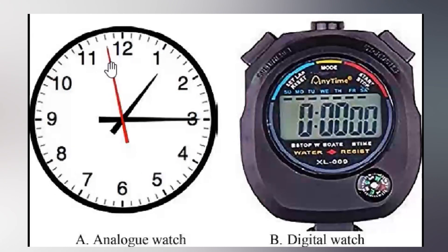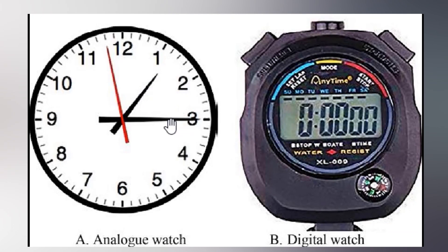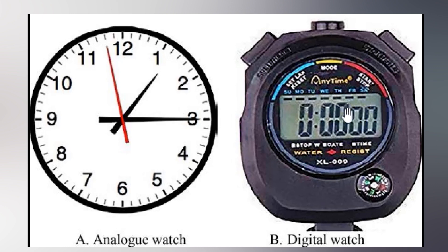The analog watch has a face — you can read hours, minutes, and seconds from it. For example, the hour hand is at 10, and the second hand is at 3, then 9, then 2.